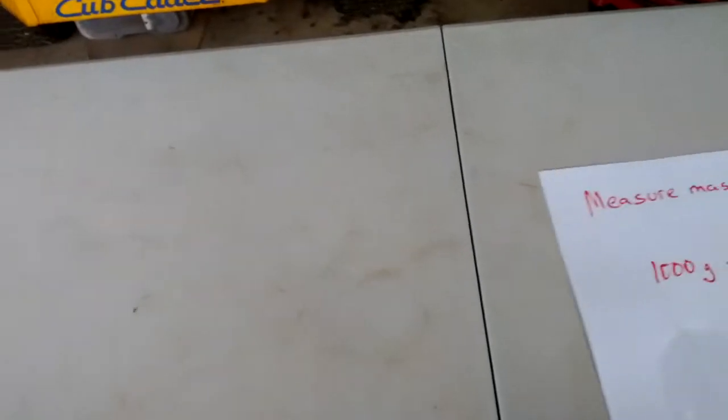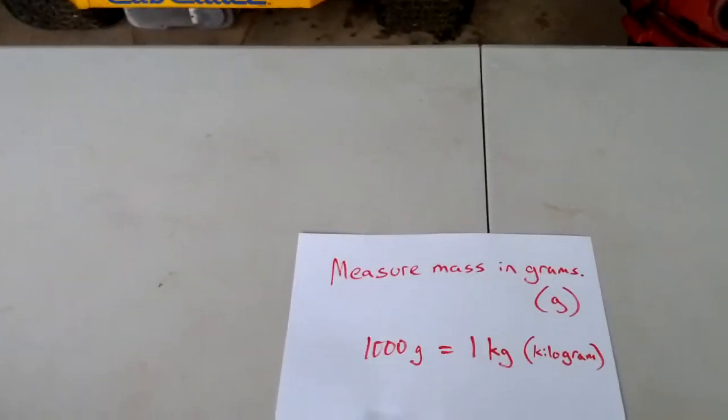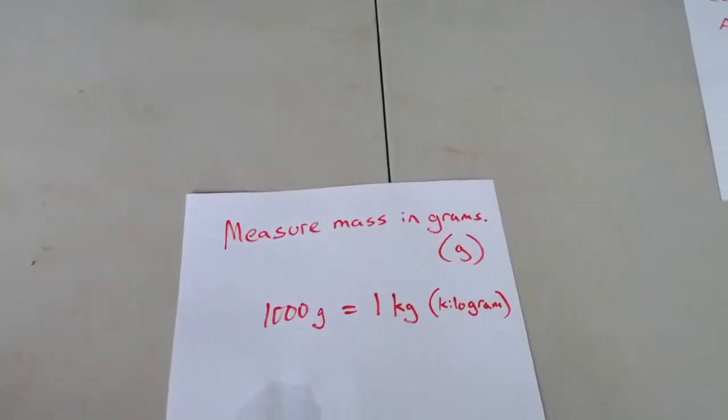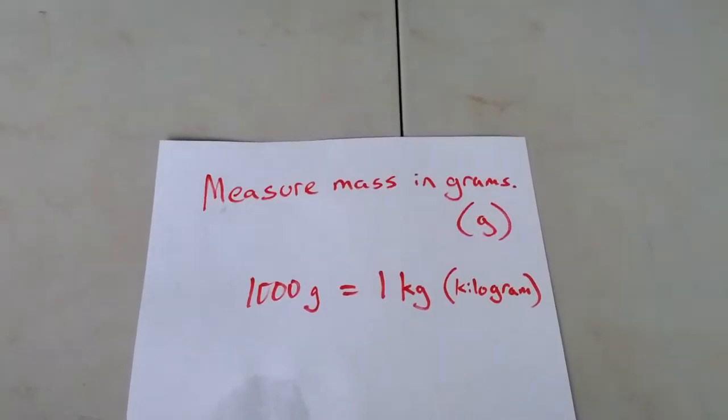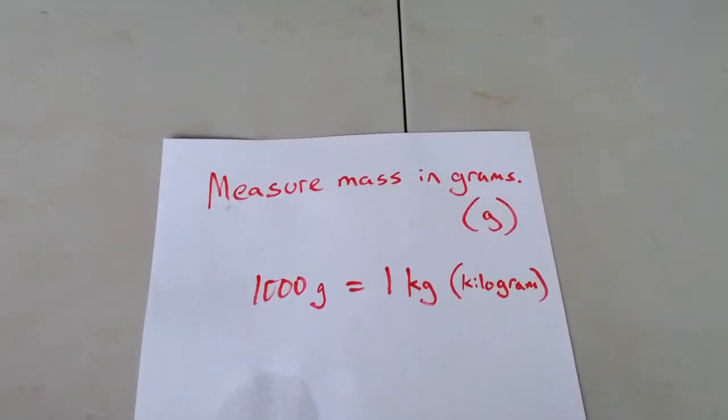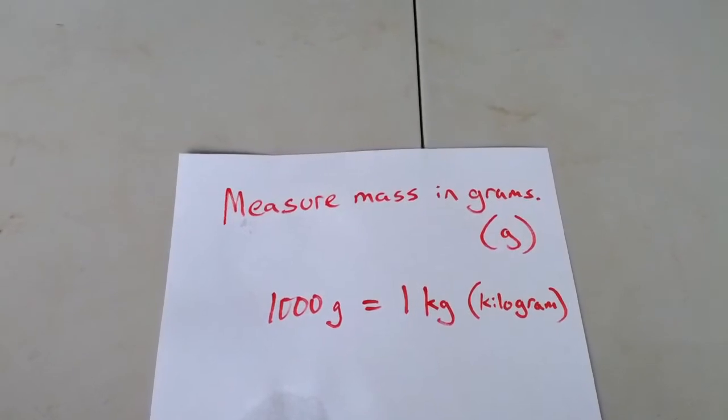This is metric. In the English system we use pounds or ounces, but in the metric system we use grams. Grams is a small unit. 1,000 grams is equal to 1 kilogram.